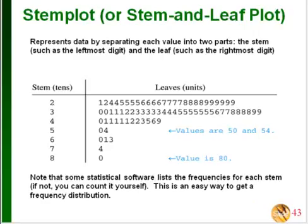A stem plot means taking your data values and separating them into two parts: the stem and a leaf. This gives you something like a frequency distribution. For example, if you had values like 50 and 54, you could separate them so that the tens place is the stem and the ones place is the leaf. Where the stem is 5, a leaf of 0 and 4 means the original data values were 50 and 54. Where the stem is 8 and the leaf is 0, the original data value is 80.